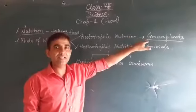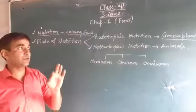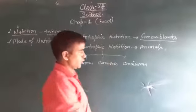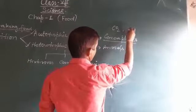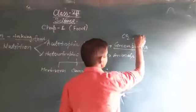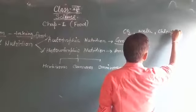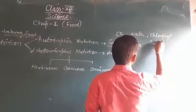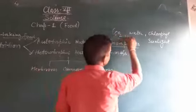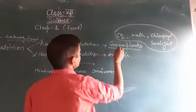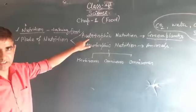Green plants make their food by photosynthesis, and the simpler inorganic components used in photosynthesis are CO₂, water, chlorophyll, and sunlight. So green plants are said to have autotrophic nutrition.